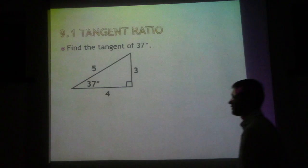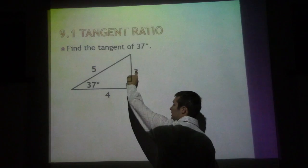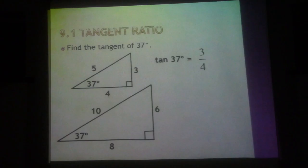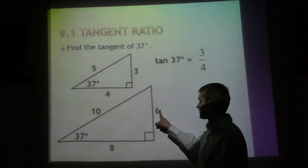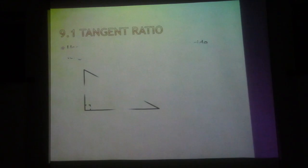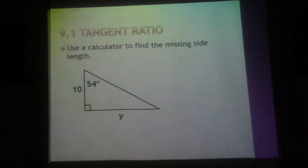Find the tangent ratio of angle 37°. We would go tangent of 37° equals the opposite leg, 3, over the adjacent leg, which is 4. We could do it here: opposite of angle 37° is 6, adjacent would be 8. Always reduce down if possible.